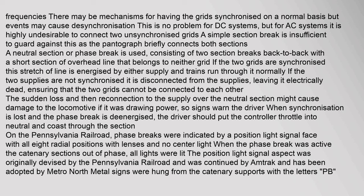If the two grids are synchronized, this stretch of line is energized by either supply and trains run through normally. If the two supplies are not synchronized, it is disconnected from the supplies, leaving it electrically dead, ensuring the two grids cannot be connected. The sudden loss and reconnection to the supply over the neutral section might cause damage to the locomotive if it was drawing power, so signs warn the driver to put the controller throttle into neutral and coast through the section. On the Pennsylvania Railroad, phase brakes were indicated by a position light signal with all eight radial positions lit.